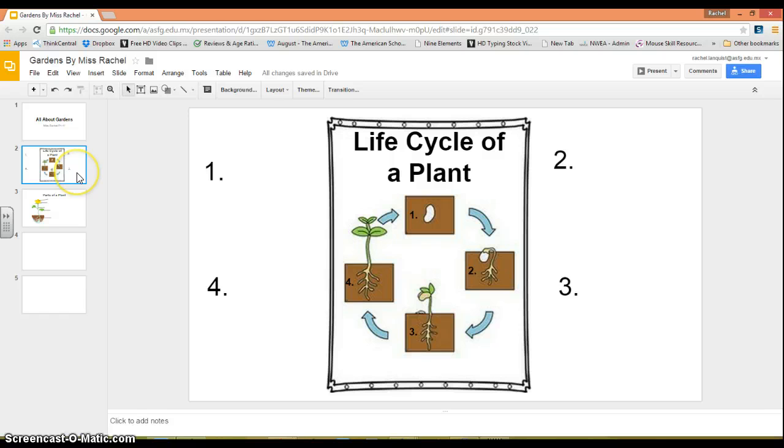Now that I have found the life cycle slide, I'm going to look at the different numbers. The numbers represent the order that a plant grows.